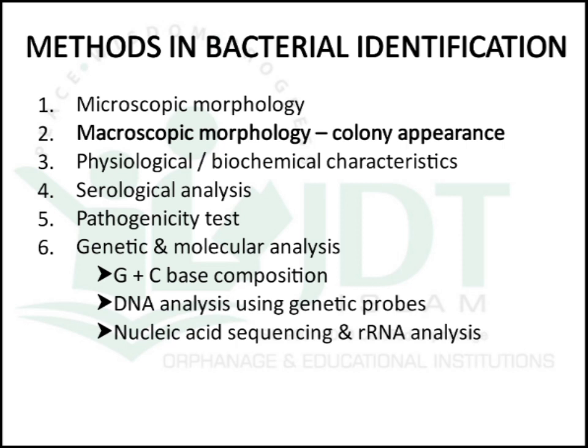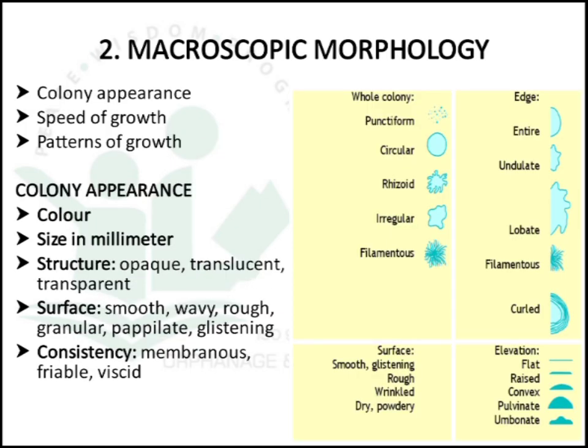The next method is macroscopic morphologic method, or colony appearance. After the culturing of the microorganism, we will study the morphology of the colony formed. According to the colony formed, we can identify the type of microorganism. We will study different macroscopic morphology like colony appearance, speed of growth, and pattern of growth.